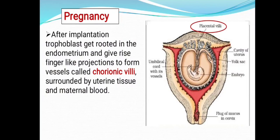give rise to finger-like projections to form vessels called chorionic villi. You can see here the finger-like projections — these are called the chorionic villi, surrounded by the uterine tissue and the maternal blood.